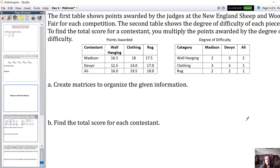To find the total score for a contestant, you multiply the points awarded by the degree of difficulty. So the first thing we need to do is create matrices to organize this information. Since it's already in a table, it's going to be pretty easy to put it in a matrix.